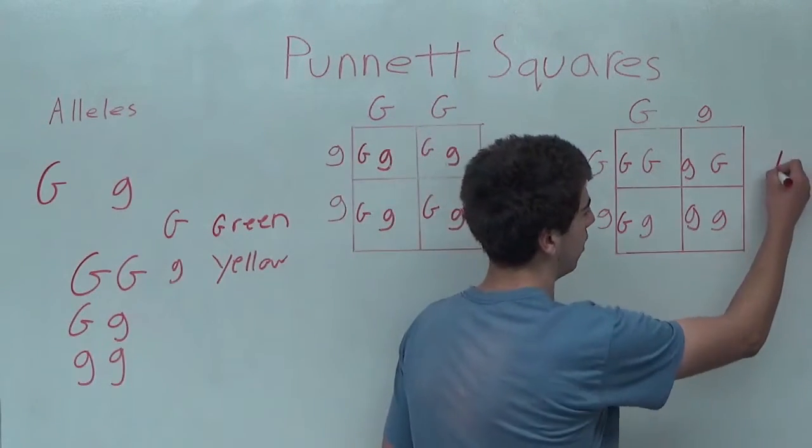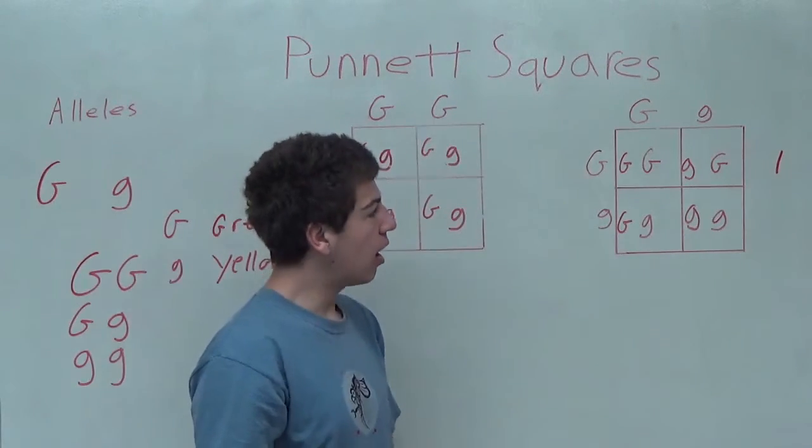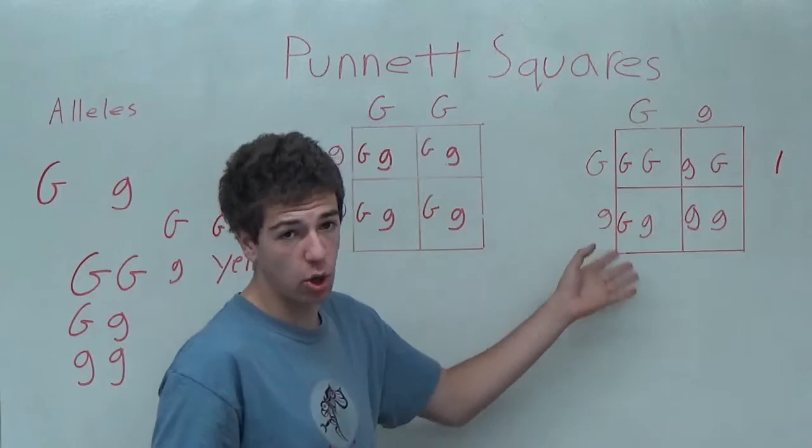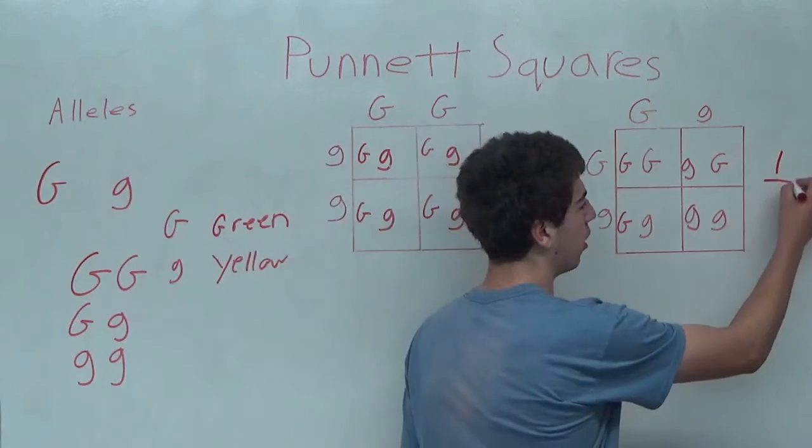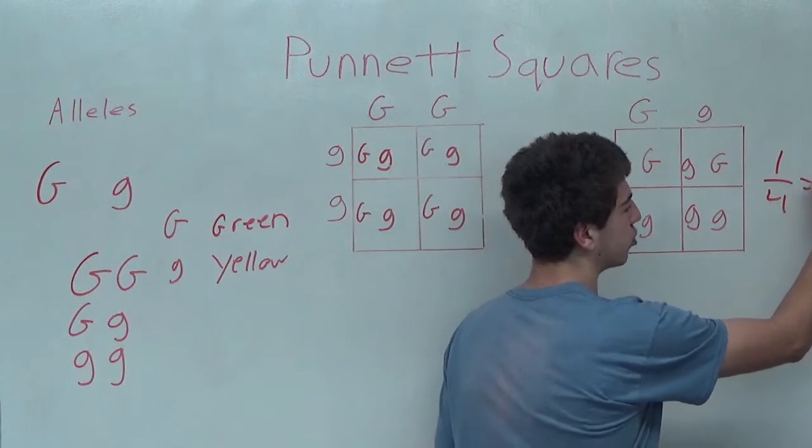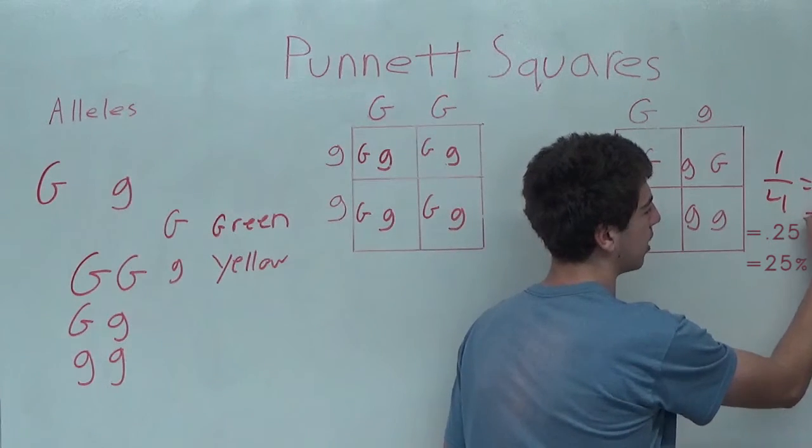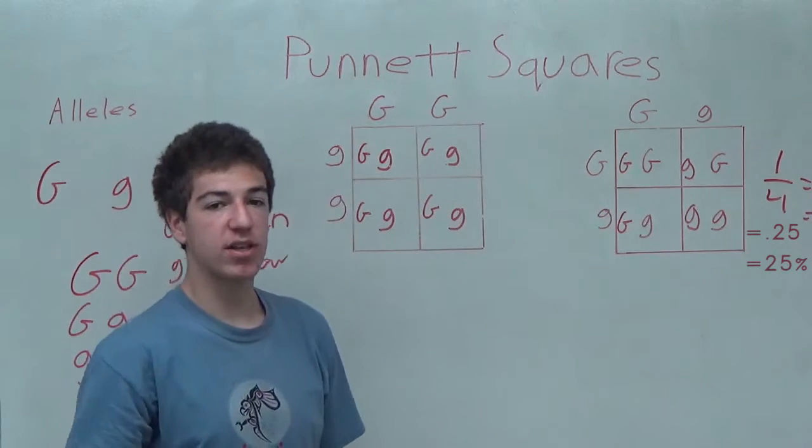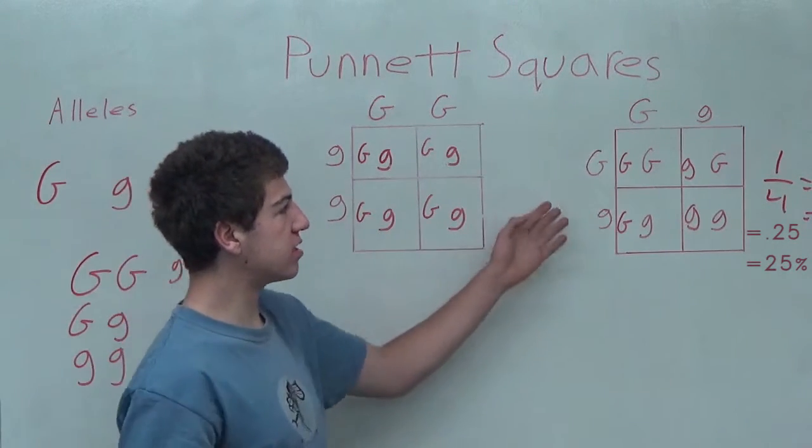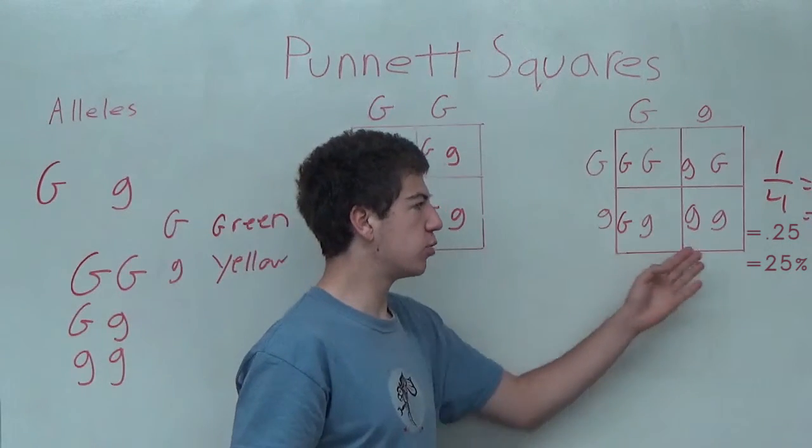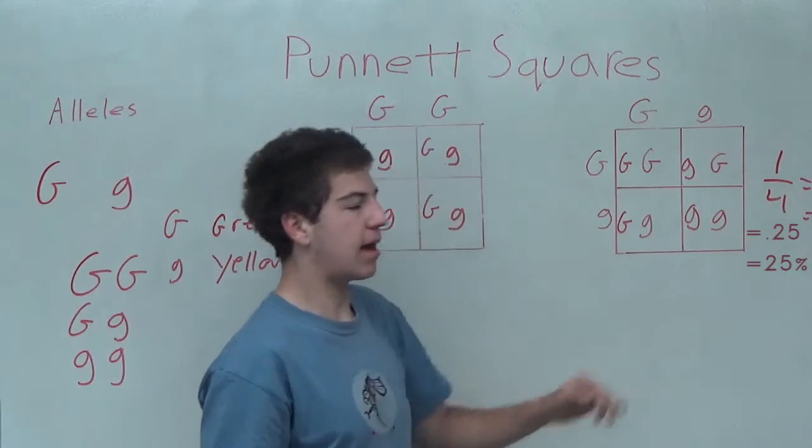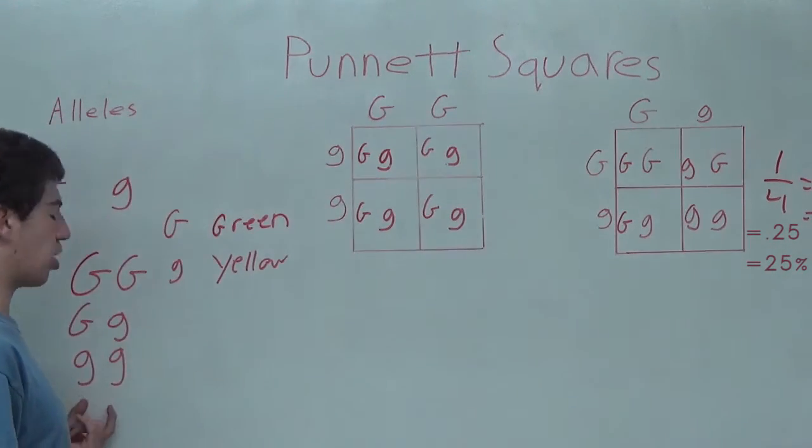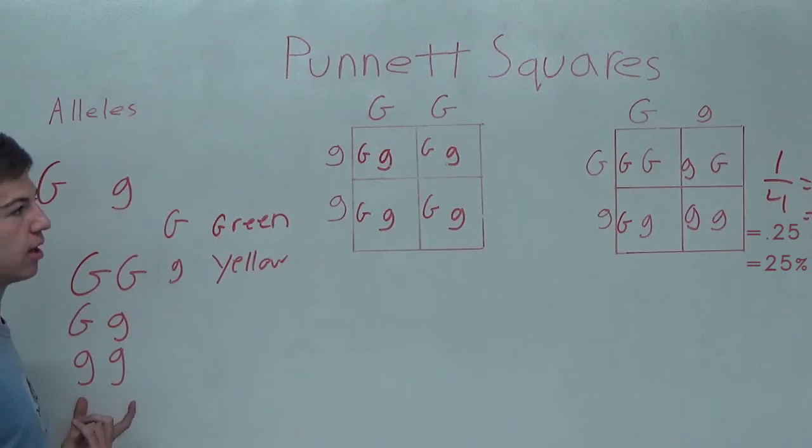So we write one. And we count how many of the squares overall in the Punnett square there are total, which is four. So one over four is equal to 25%, which means there's a 25% chance that given these two parents, you will end up with a yellow pea pod displaying the double lowercase g alleles.